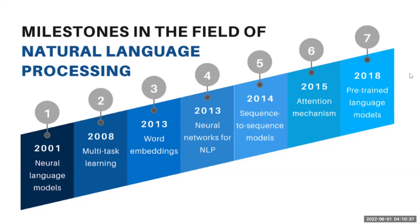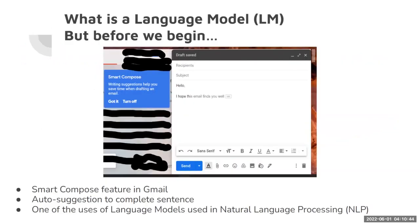Moving on, what exactly is a language model? I'd like to share a screenshot of something that everybody has been through — whenever you're trying to write an email, Gmail auto-suggests and completes the sentence. This feature is known as Smart Compose, which basically uses language models in natural language processing.